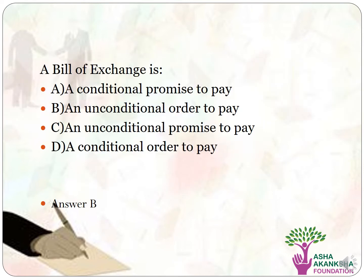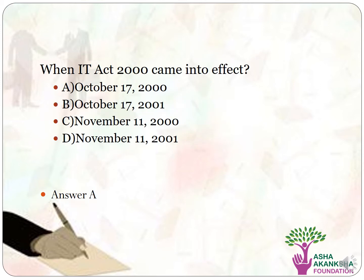The first question is: what is a bill of exchange? Options are: A) a conditional promise to pay, B) an unconditional order to pay, C) an unconditional promise to pay, or D) an unconditional order to be. The correct answer is option B, that is an unconditional order to pay.